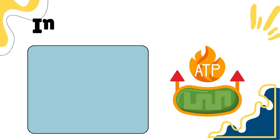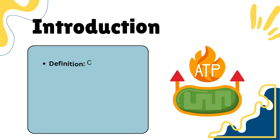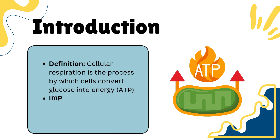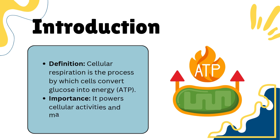To begin, let's define cellular respiration. It is the process by which cells convert glucose, a simple sugar, into adenosine triphosphate, ATP, the energy currency of the cell. This process is essential for powering various cellular activities and maintaining life.